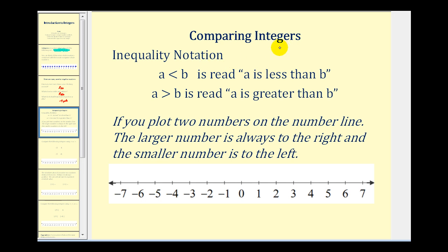Let's talk about comparing integers. We can compare integers using inequality notation. We read inequality statements from left to right, just as you read a sentence. We would read this as 'a is less than b.' And if the inequality symbol is reversed, we would have 'a is greater than b.' Remember, if you think of this as an alligator mouth, the alligator likes to eat the larger number. So when trying to compare integers, it's often helpful to plot them on the number line, because the larger numbers are always to the right and the smaller numbers are always to the left.